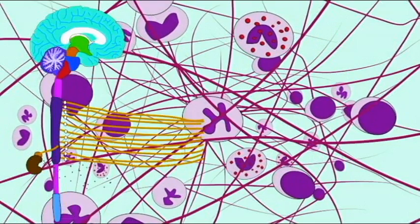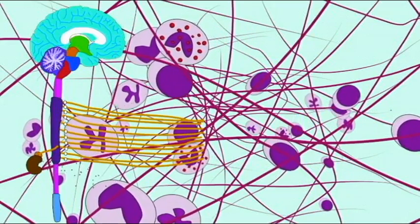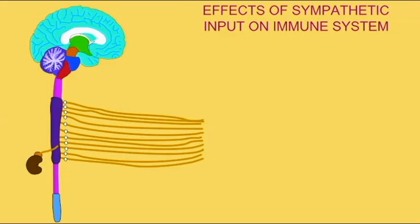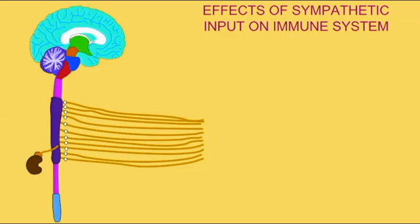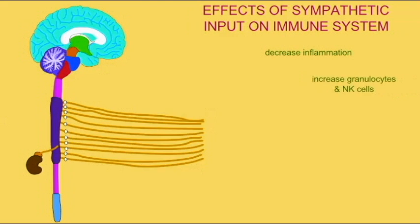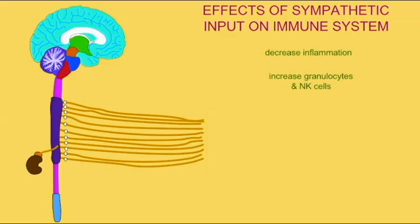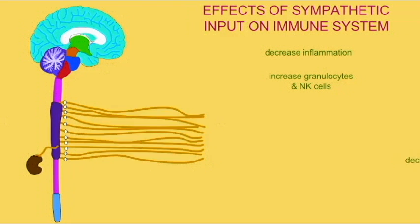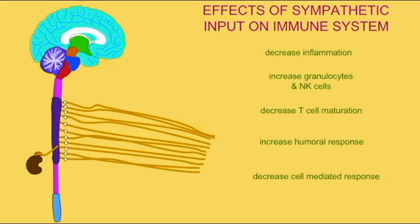Altered sympathetic stimulation has been observed to have a number of effects on immune responses. While the effects of the sympathetic nervous system on immunity are complex and still under study, in general, sympathetic stimulation seems to decrease inflammation, increase the number of granulocytes and natural killer cells in the blood while having little effect on lymphocyte numbers, decrease the maturation of T-cells, and encourage humoral responses at the expense of cell-mediated responses.